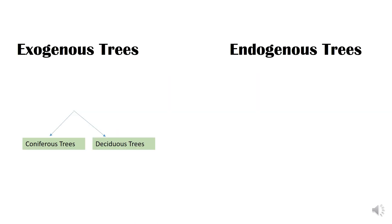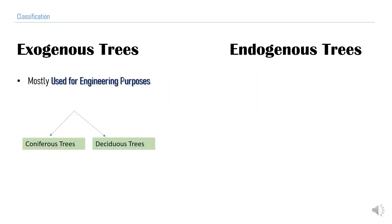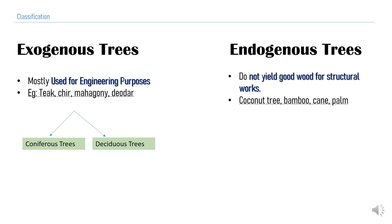Exogenous trees are mostly used for engineering purposes, while endogenous trees do not yield any kind of wood for engineering activities. Examples of exogenous trees are teak, chir, mahogany, and deodar. Examples of endogenous trees are coconut tree, bamboo, cane, and palm.